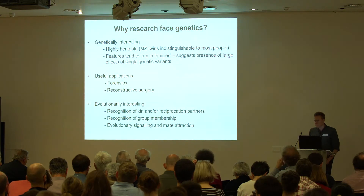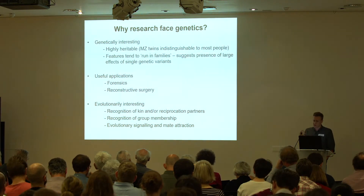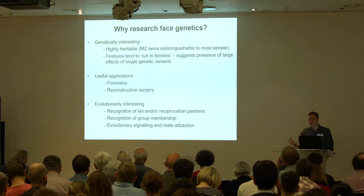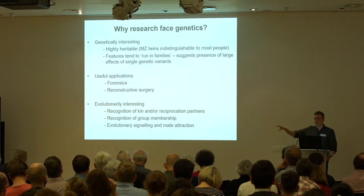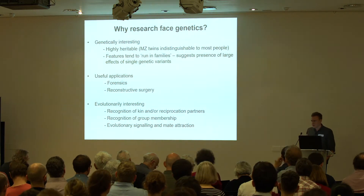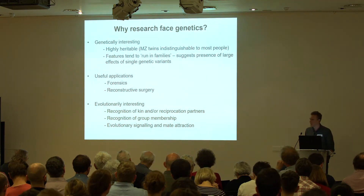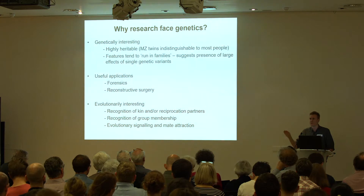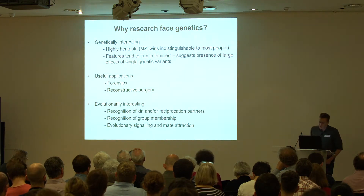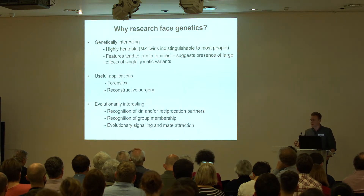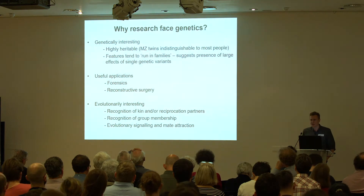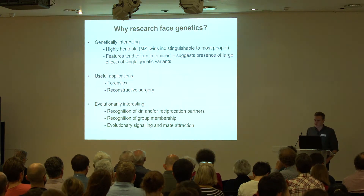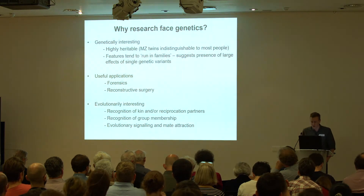There are also useful applications — most obviously in forensics, and also in surgery. If presented with a patient who has a congenital syndrome, surgeons are keen on using objective outcome criteria to direct their surgery. At the moment this is usually achieved using the average feature within the appropriate ethnic group, but it would be better to predict what a patient would have looked like without their deletion, insertion, or point mutation. Face is also evolutionarily interesting, probably involved in recognition of kin, reciprocation partners, group membership, signaling of genetic fitness, mate attraction, and similar processes.